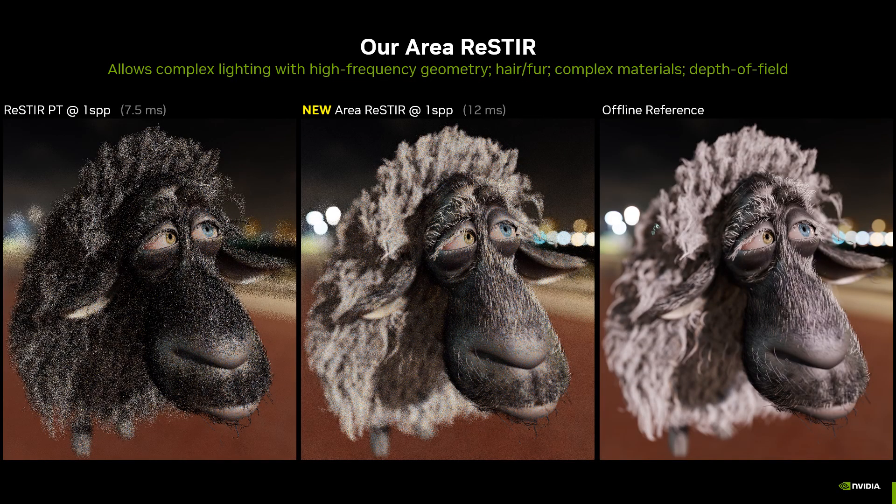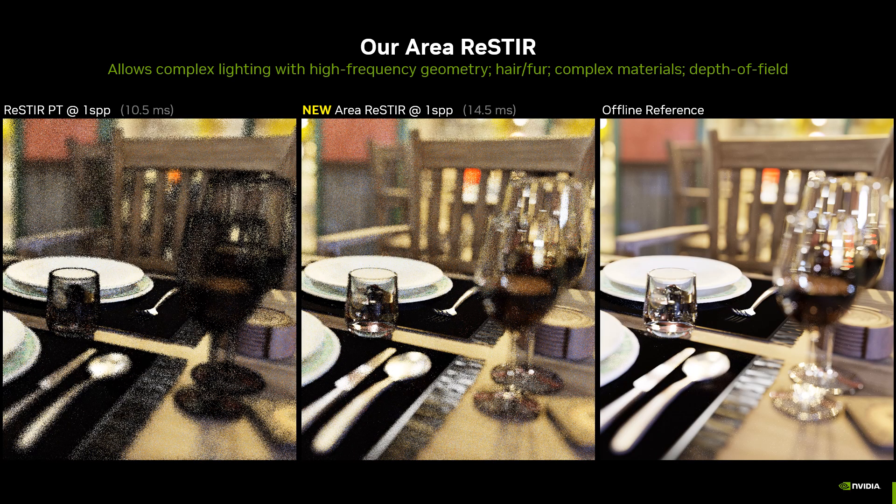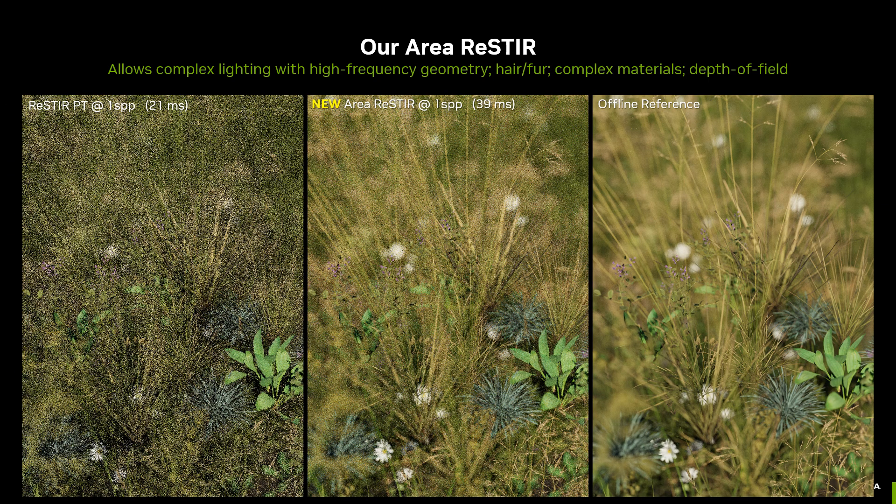In summary, our Area ReStir allows complex lighting in conjunction with high-frequency geometry, complex materials, depth of field, and the hair and fur shown in the sheet model. This bistro environment shows our improved quality on glass and with complex camera depth of field. We end with our foliage environment comparing ReStirPT, our new Area ReStir, and an offline reference.